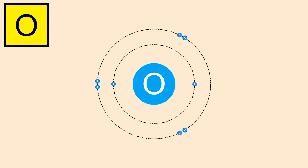The atomic number of oxygen is 8, meaning it has eight electrons: two in the first shell and six in the second or valence shell. During bonding, oxygen also tries to complete its octet and therefore requires two more electrons in its valence shell.